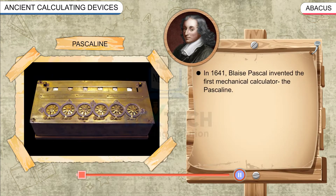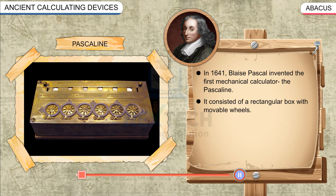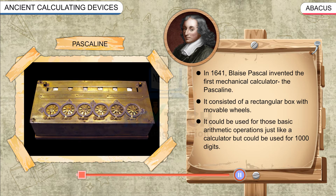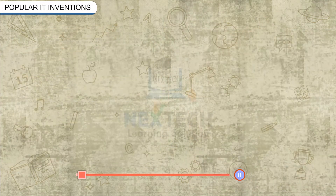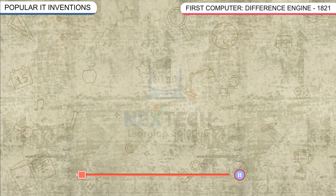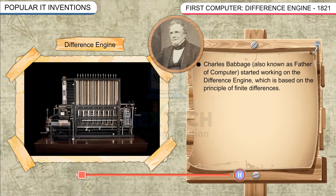Pascaline: In 1641, Blaise Pascal invented the first mechanical calculator, the Pascaline. It consisted of a rectangular box with movable wheels. It could be used for basic arithmetic operations, just like a calculator, but could handle up to thousand digits.